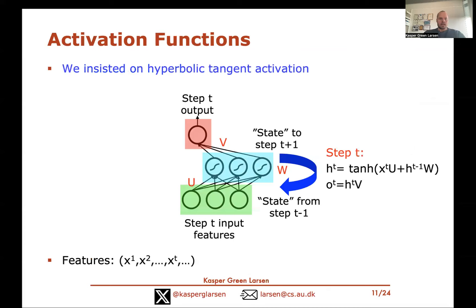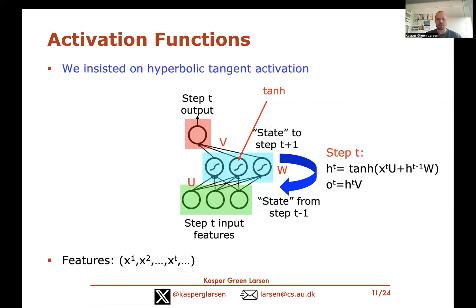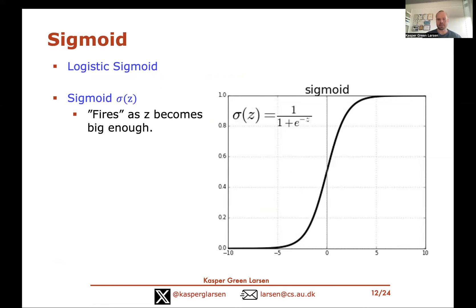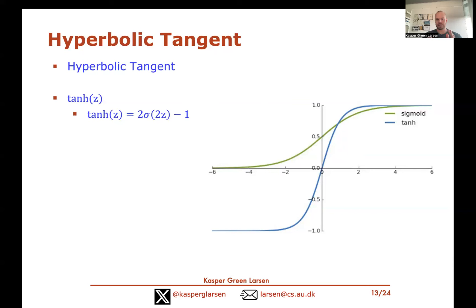Another thing to discuss is the use of activation functions in recurrent neural nets. In the previous video we insisted on using the hyperbolic tangent function (tanh) in the hidden layer. The sigmoid function takes values between zero and one; the tanh function is a scaling and stretching of the sigmoid so that it takes values between minus one and one instead. Let's see what would go wrong if we did not use this tanh activation function.